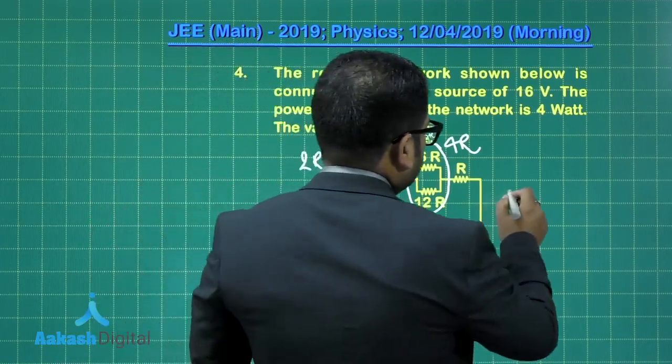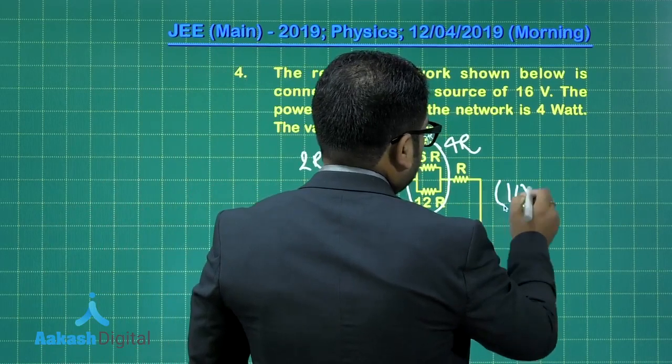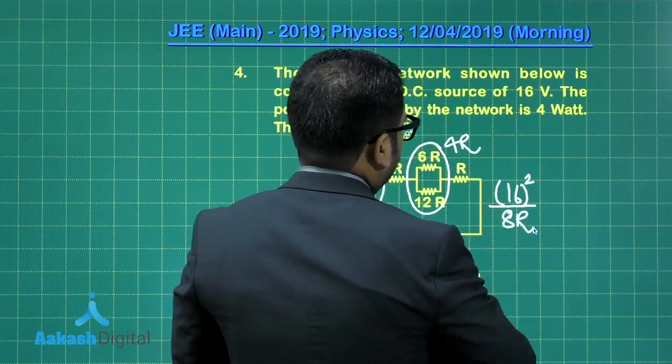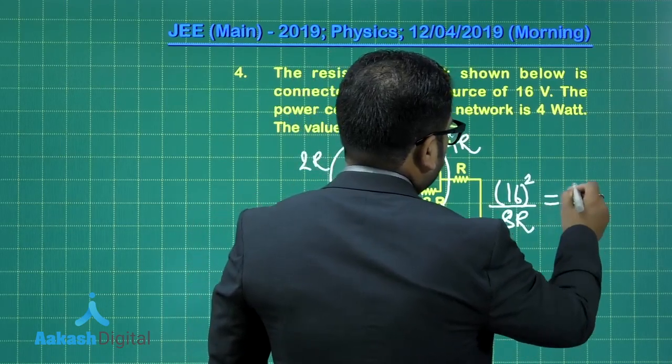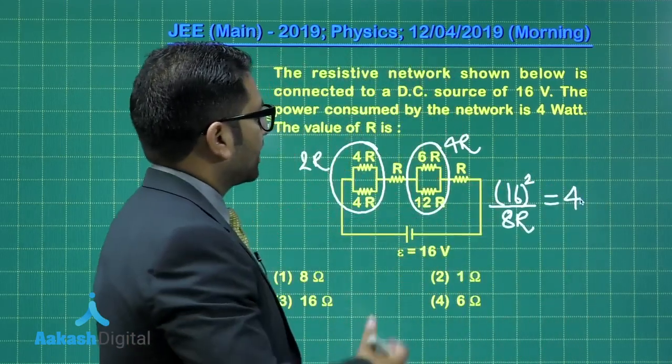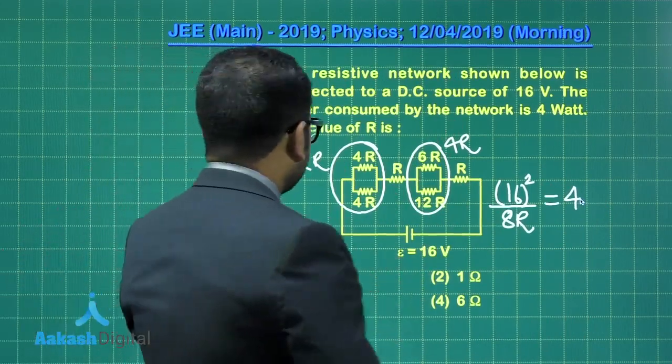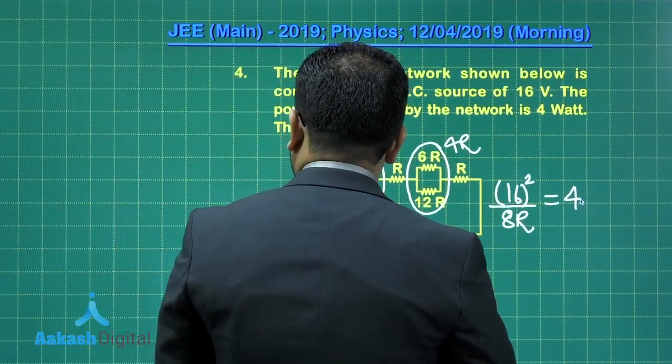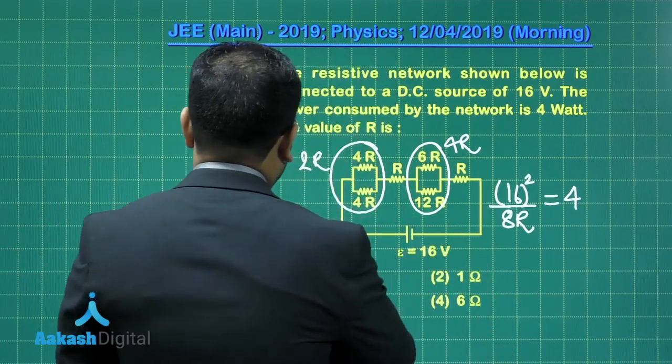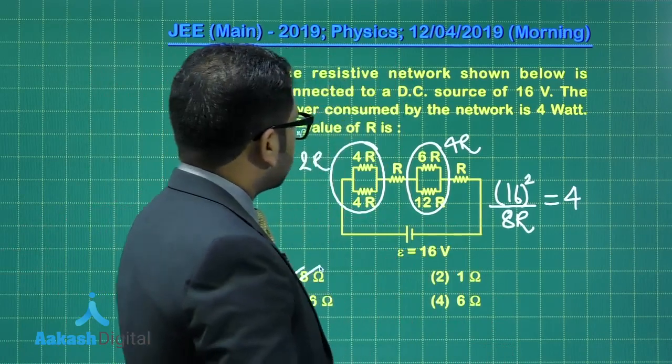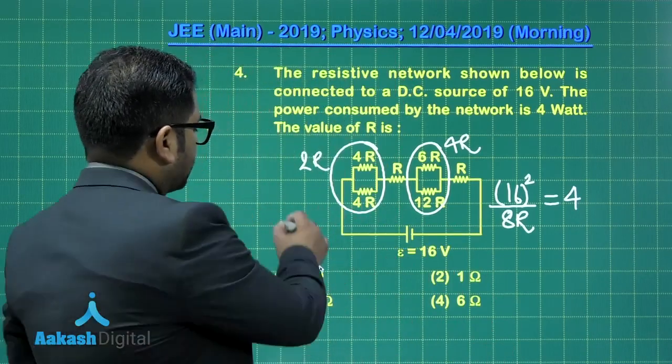What would be the total power consumed? That's going to be 16 squared divided by 8R, and this value is to be equated to 4. That's the only thing which is asked. Now, it's a simple calculation. You can solve for R, and the correct option that you would be getting is 8 ohm. So, option number 1 would be the correct option for this question.